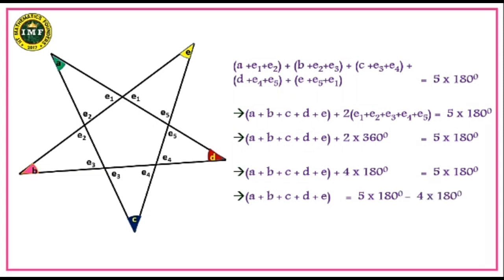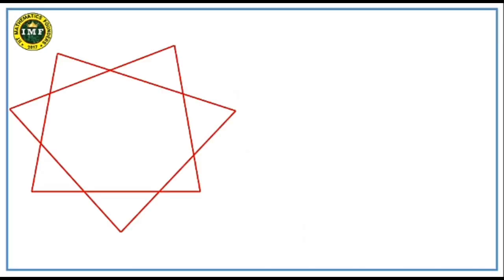So finally, the sum of the angles formed at the vertices of this complex figure equals 180°. I am going to do the same way for the rest of the problems as well.